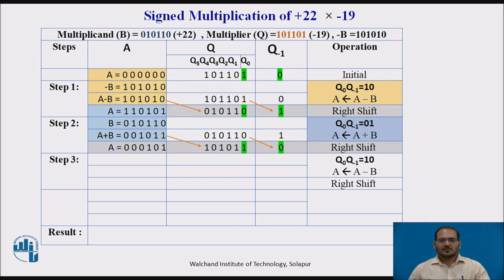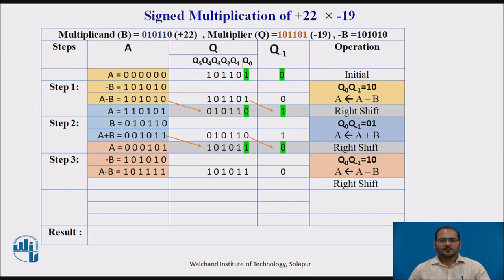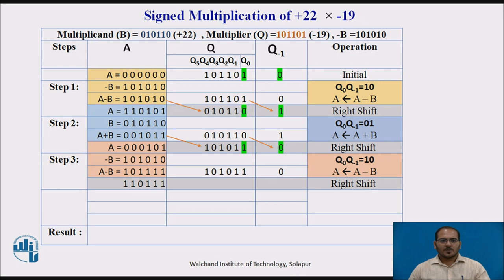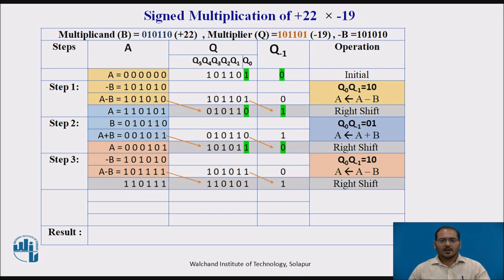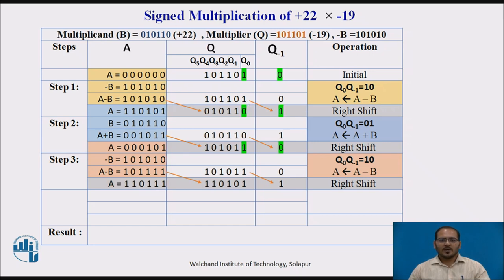In step 3, the operation depends on Q0 and Q-1, which is 1-0, so the operation is A minus B and right shift. A value is as-is; minus B value is 101010. Perform A minus B — the result is 101111. Keep the value of Q and Q-1 as-is, then perform the right shift of A, Q, and Q-1 by 1 bit to the right. The values of A, Q, and Q-1 at end of step 3 are recorded in the table.